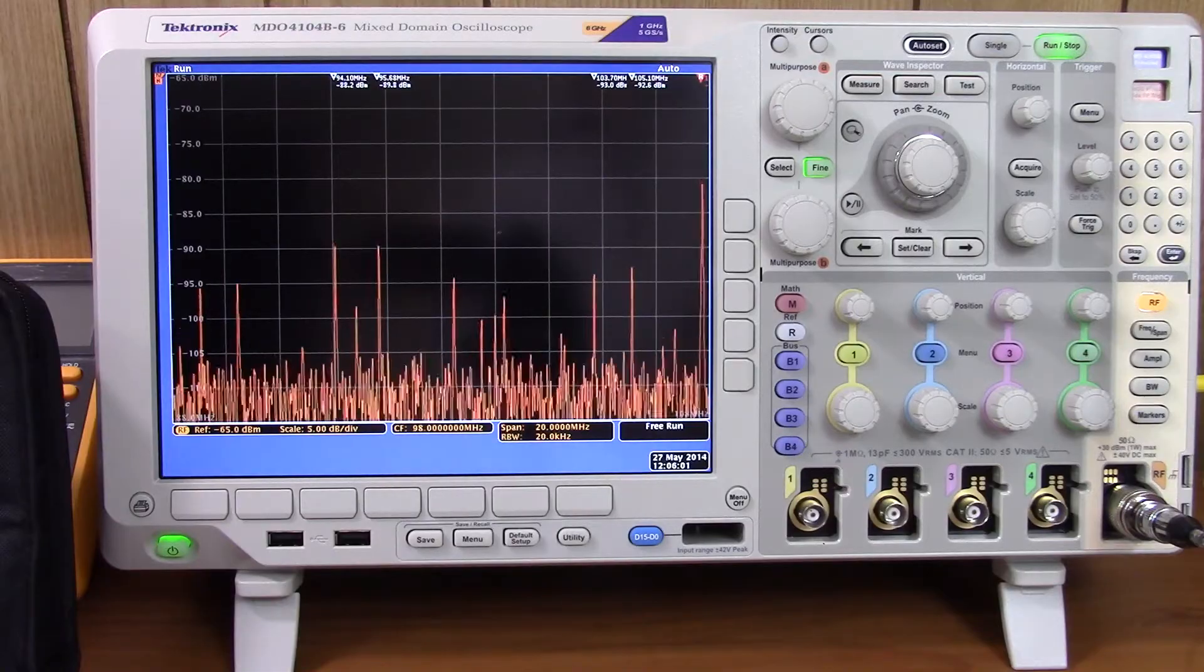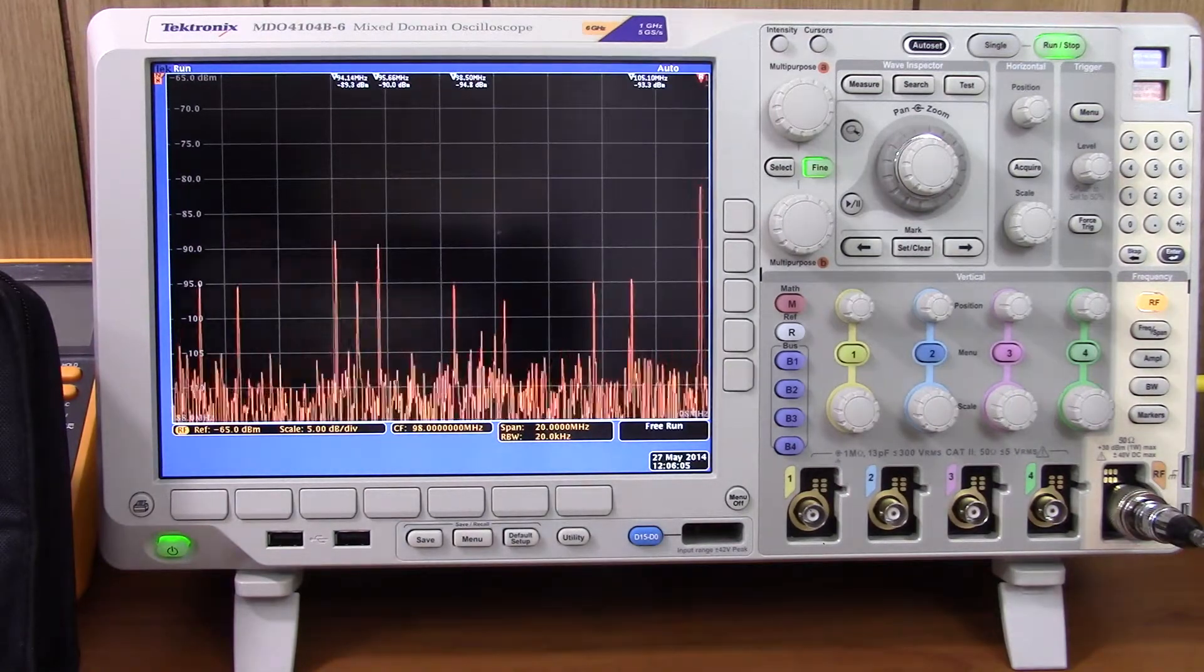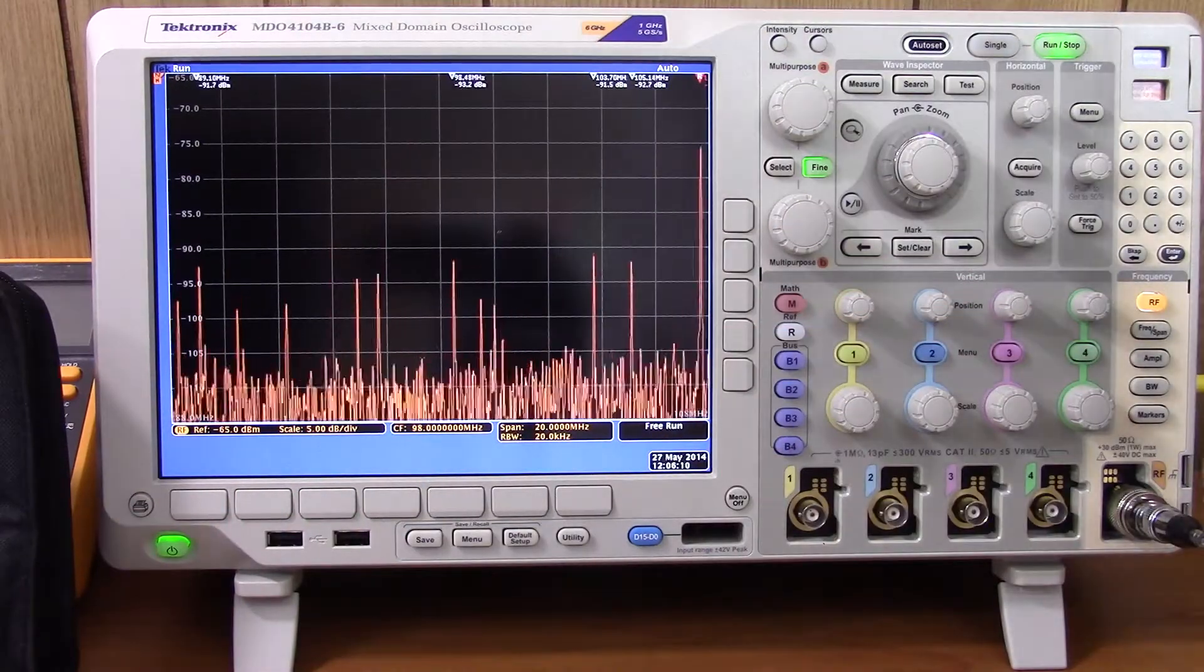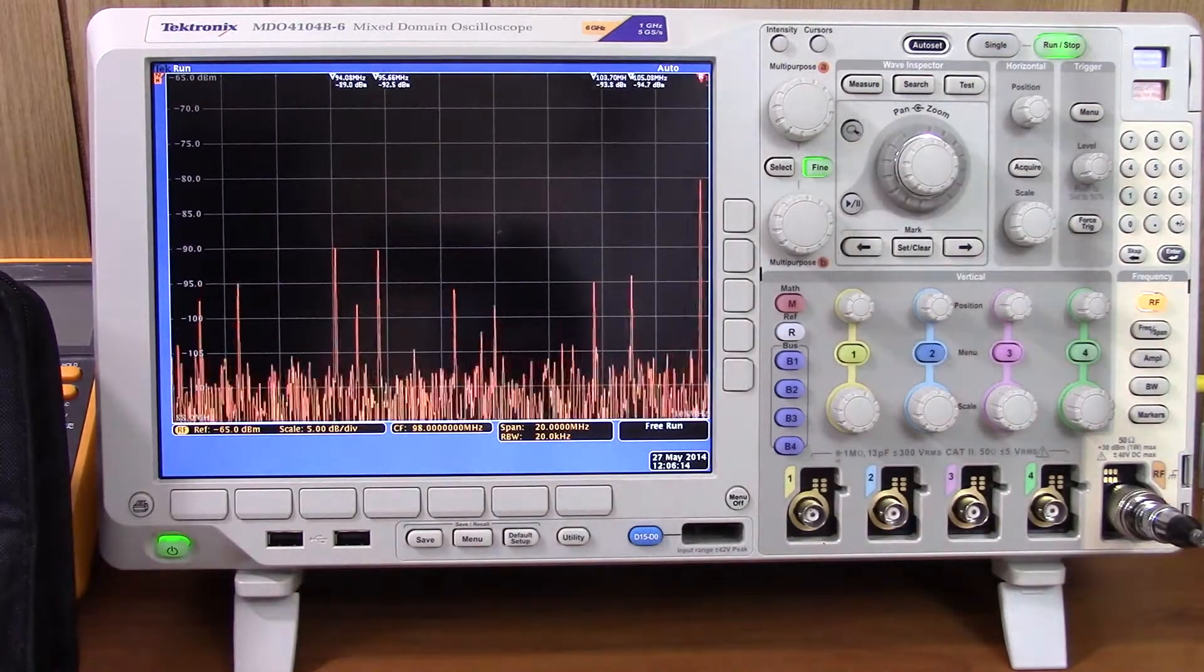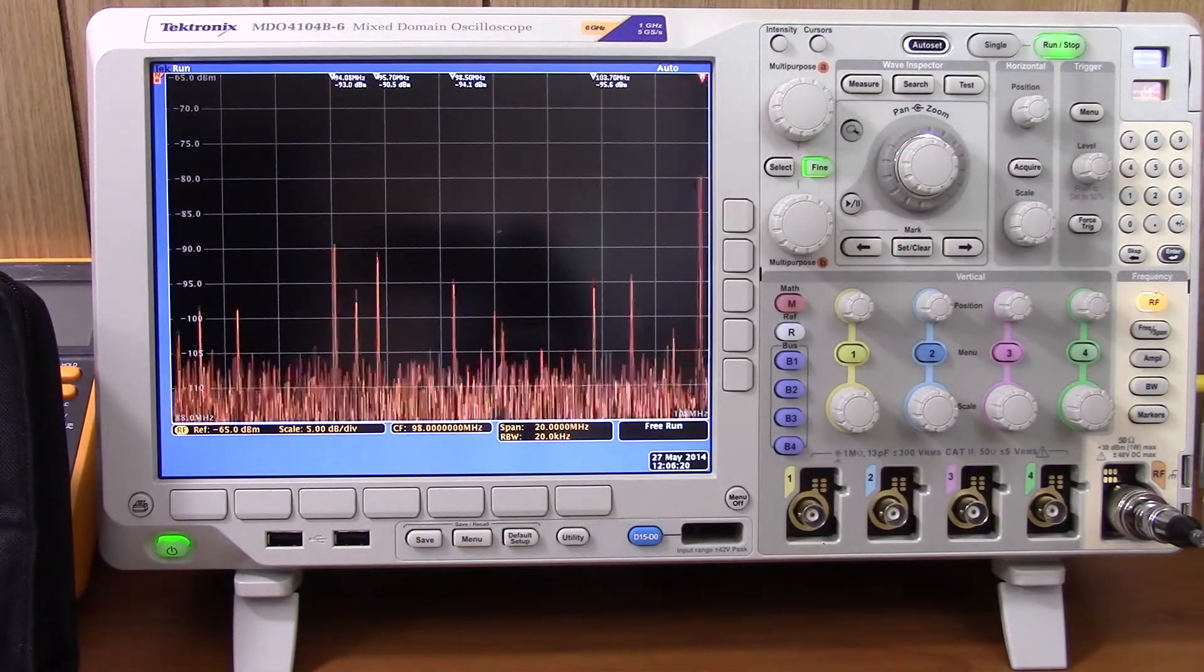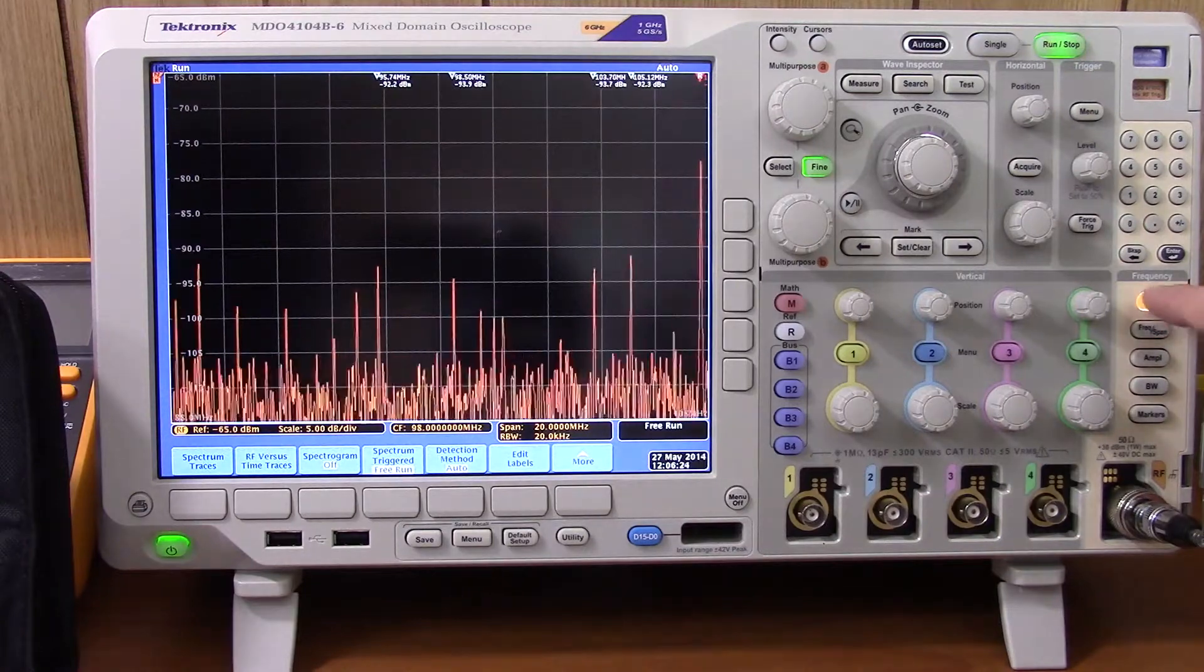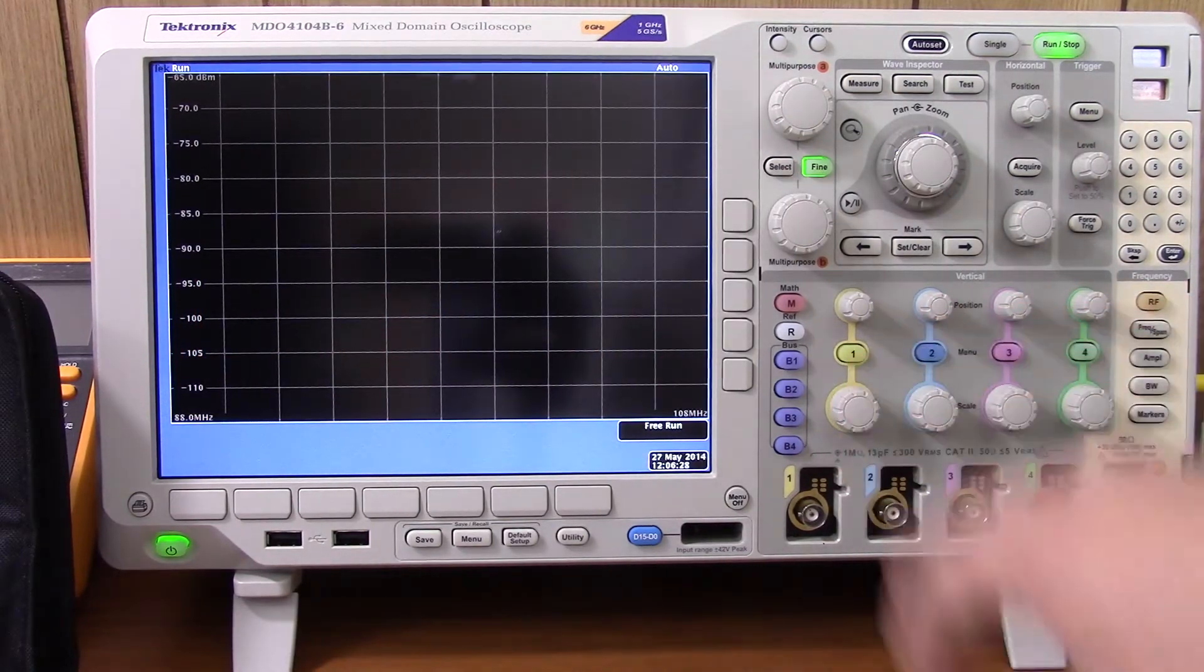What you're seeing on the screen right now is the spectrum of the FM broadcast spectrum. Starts at 88 MHz, ends at 108 MHz here. Just use this little antenna here with a BNC-to-N adapter that I had laying around. And that's the broadcast band around here. You see some automatic markers up here showing some of the stations. So the first thing we want to do is disable RF.